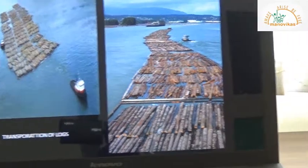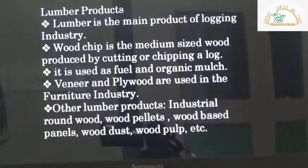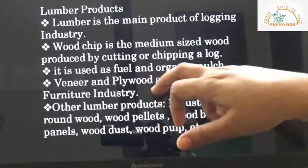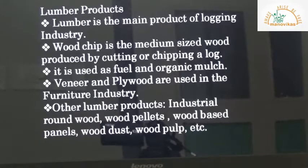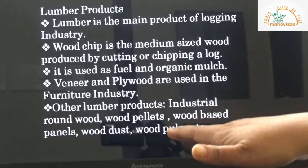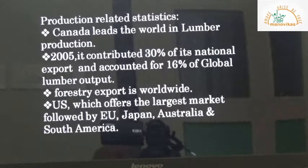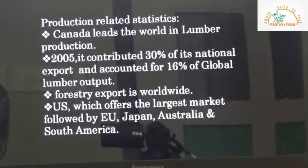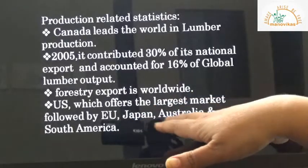Lumber is the main product of the logging industry — these are logs of wood. Other products include wood chips (medium-size wood used as fuel or organic mulch), veneer and plywood used in the furniture industry, round wood, wood pallets, wood dust, and wood pulp. Canada is the world's largest leading producer of wood — in 2005, 30 percent of its national produce accounted for 60 percent of global output. Canada exports wood and wood products worldwide; the US offers the largest market, followed by the European Union, Japan, Australia, and South America.